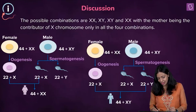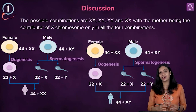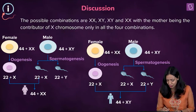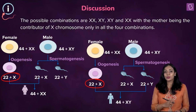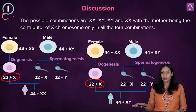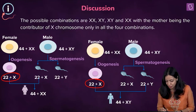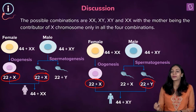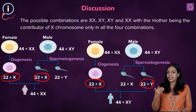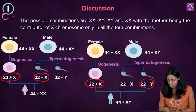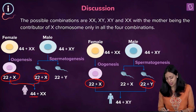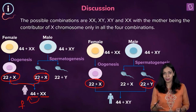Now let's consider the different possibilities during fertilization. Females are homogametic — they always produce gametes with 22 autosomes plus the X chromosome. Males can produce either 22 autosomes plus X, or 22 autosomes plus Y. If the sperm carrying the X chromosome fuses with the egg carrying the X chromosome, it results in a zygote with 44 autosomes and 2 X chromosomes, developing into a female baby.